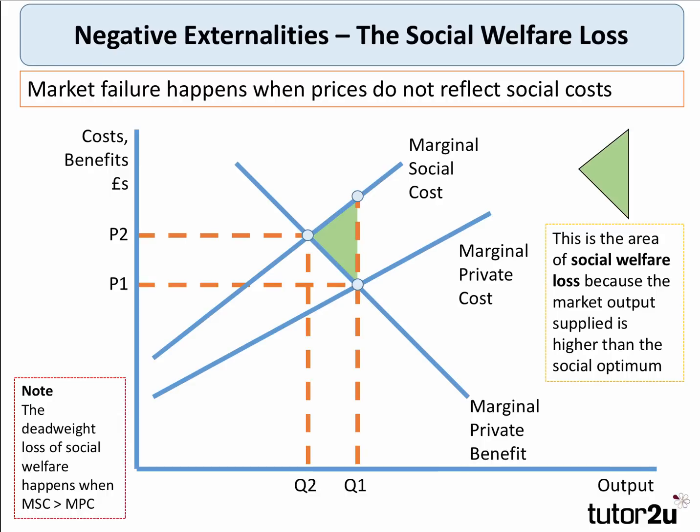The diagram shows how marginal social cost exceeds the marginal private cost. That gap is getting bigger, suggesting that the scale of the pollution at the margin is increasing. The green area is the area of the deadweight loss of social welfare, because Q1, the social optimum, lies above the private optimum Q2.